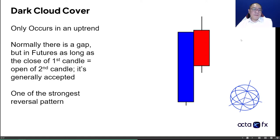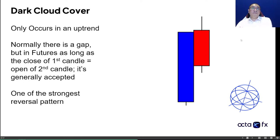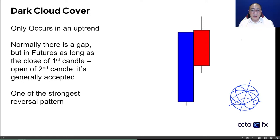The bearish piercing that we just talked about — there's actually another pattern here that's very similar called the dark cloud cover. It only occurs in an uptrend and this is actually one of the strongest reversal patterns. You need to understand how the futures market and Forex market use candlesticks — they're actually a modification of the candlesticks used in the equity market. All technical analysis starts from the equity market. It's very common for the equity market to create a gap, especially this one which gaps to the upside at the end of an uptrend.